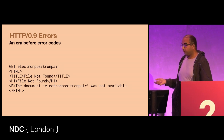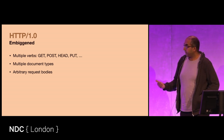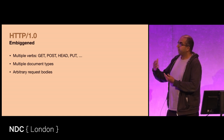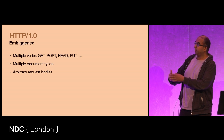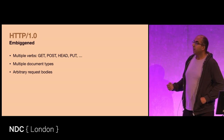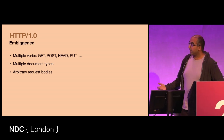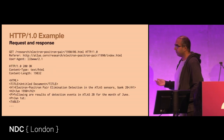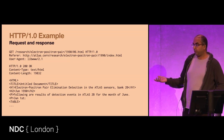Of course this was not ideal, and it took a few years to get a 1.0 standard put together, but it added a whole lot of things. It added error codes, it added verbs — so you could now not just get a document, you could post attachments to documents, you could put updates to documents, you could have different types of documents served or accepted, you could have arbitrary request bodies. So if you've ever dealt with HTTP or direct communication over Telnet, this will look a lot more familiar.